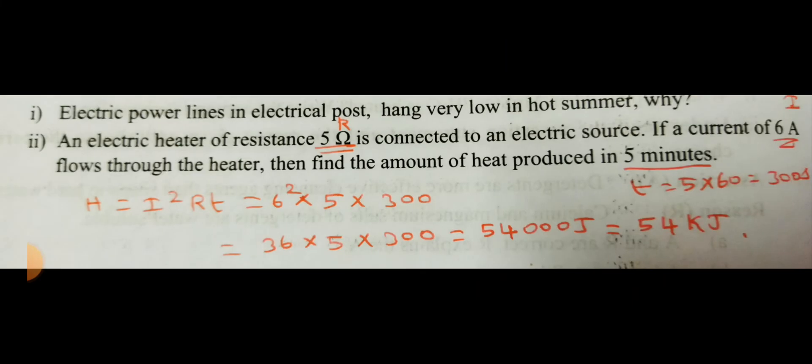The next question: an electric heater of resistance 5 ohm is connected to an electric source. If a current of 6 ampere flows through the heater, then find the amount of heat produced in 5 minutes. Here they given the time in terms of minutes, we have to calculate in terms of seconds. So time t is equal to 5 into 60, so 300 seconds.